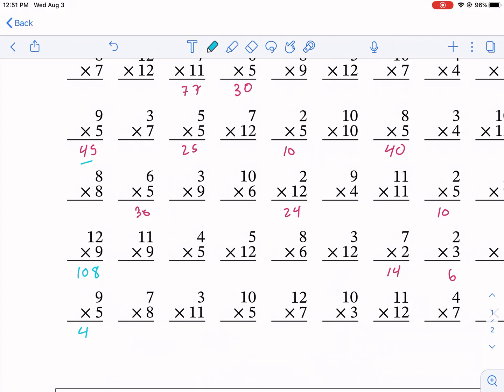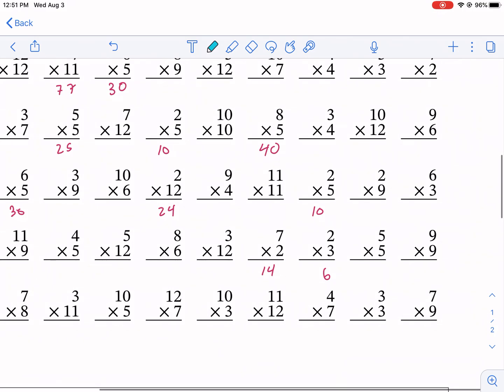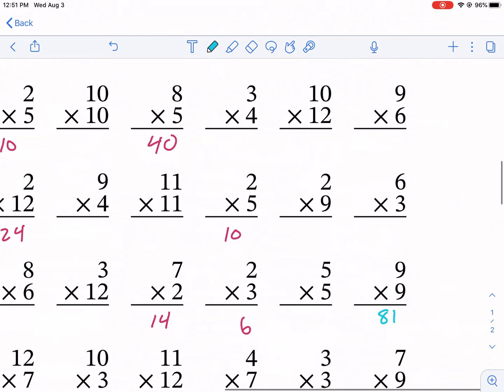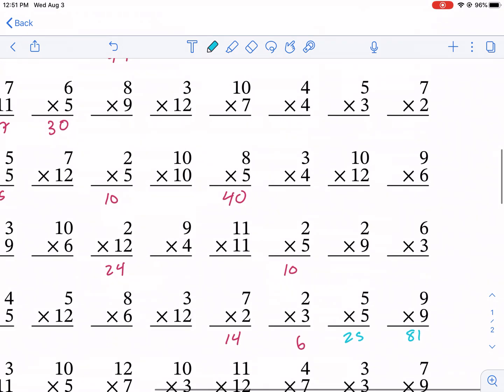Here we go, so 10 times 9 is 90, subtract 9 is going to be 81. And then yeah, so the rest of these are just you need to memorize them.